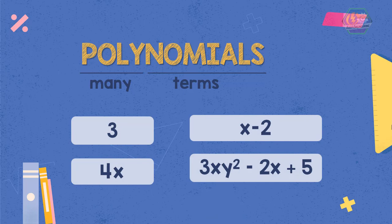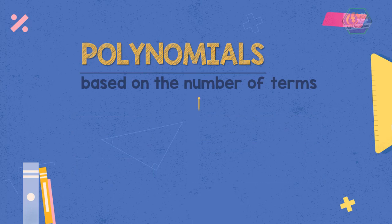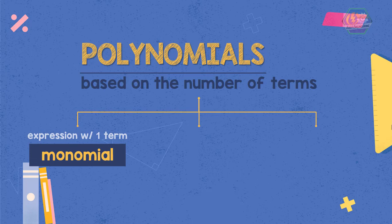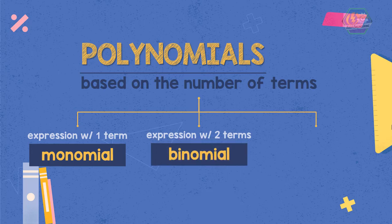Polynomials also have different names based on the number of terms. If you have an expression with one term, it is called monomial. If you have an expression with two terms, it is called binomial. And an expression with three terms is called trinomial.